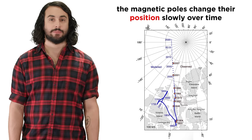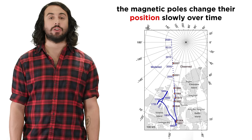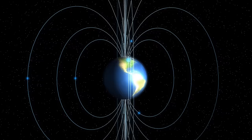The magnetic poles actually change their position slightly over thousands of years, as material in the core changes position.